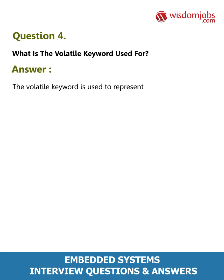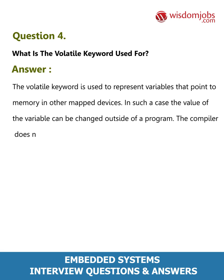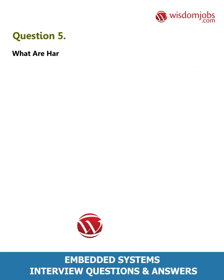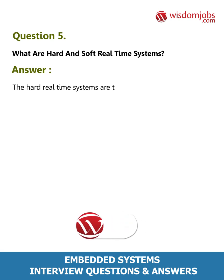Question 4: What is the volatile keyword used for? Answer: The volatile keyword is used to represent variables that point to memory in memory-mapped devices. In such cases, the value of the variable can be changed outside of the program. The compiler does not perform additional optimizations to the code when the volatile keyword is present.